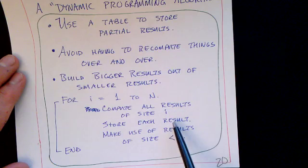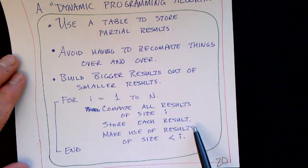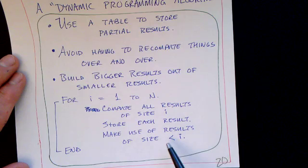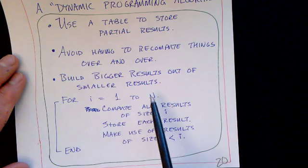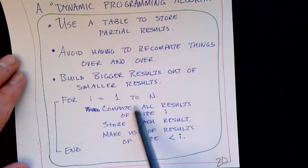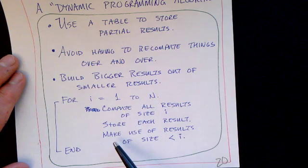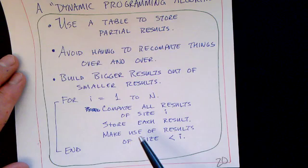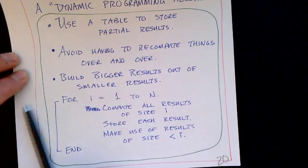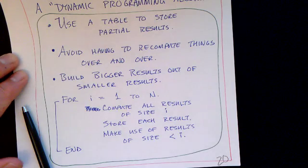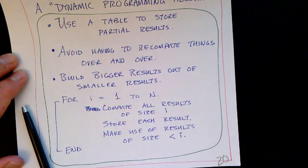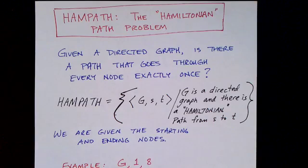And then you make use of those results in computing results for larger i. And so you just keep repeating until you run through n. And when the body of this takes n squared time, then the whole algorithm takes n cubed time. And that's basically what happens with the algorithm to parse an arbitrary context free grammar.